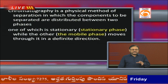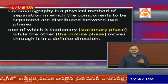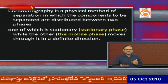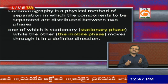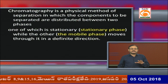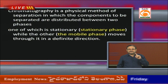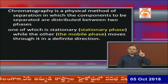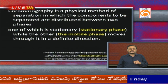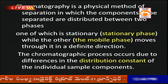Chromatography is a physical method used for separation of components distributed between two phases: a stationary phase and a mobile phase. The stationary phase remains fixed while the mobile phase moves over it. Whatever type of chromatography technique you use, you must understand the stationary phase and mobile phase — their physical states and properties. The chromatography process occurs due to differences in the distribution constant of individual sample components.